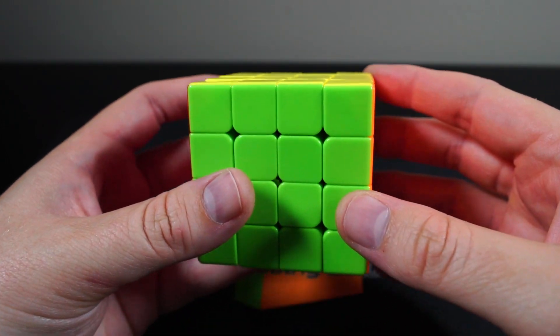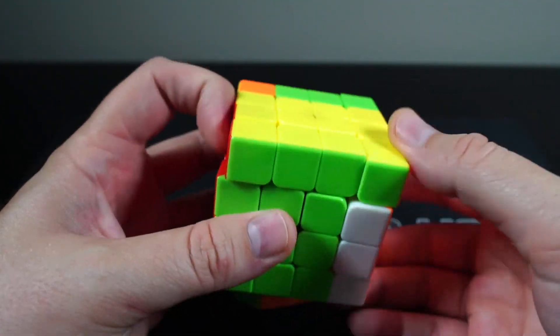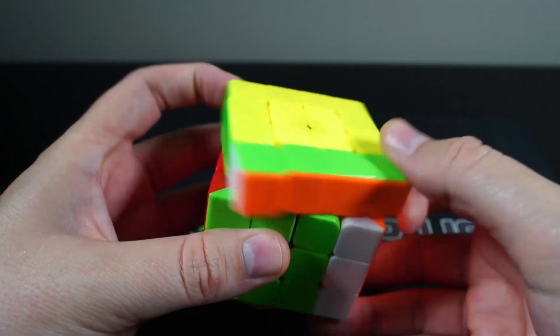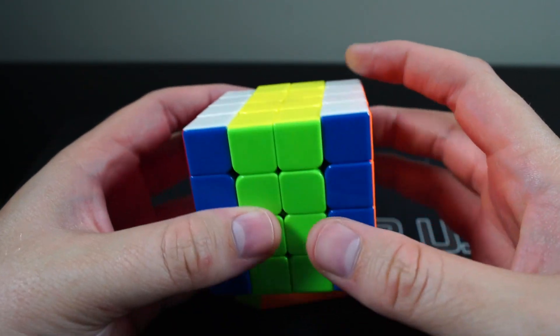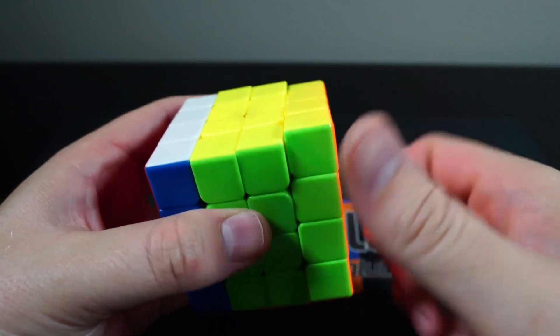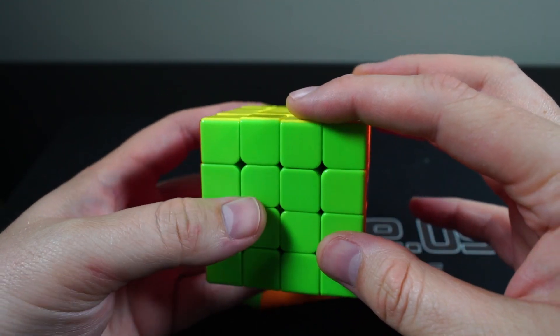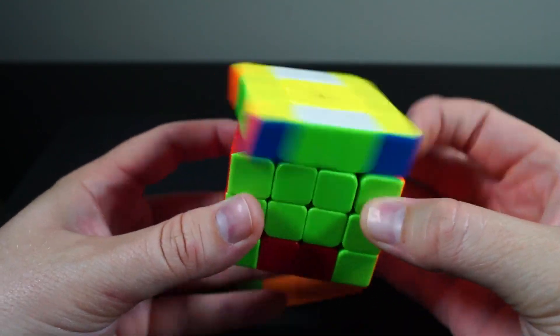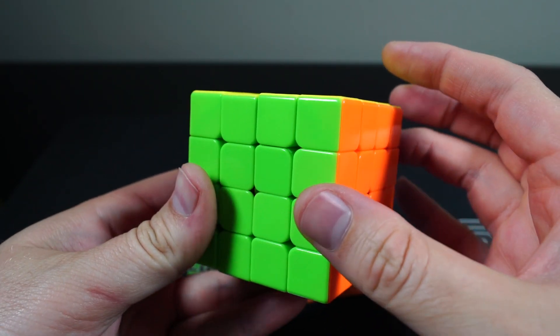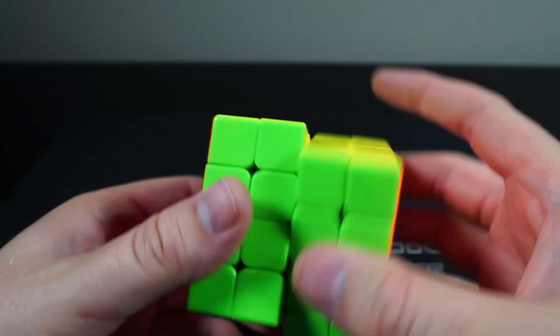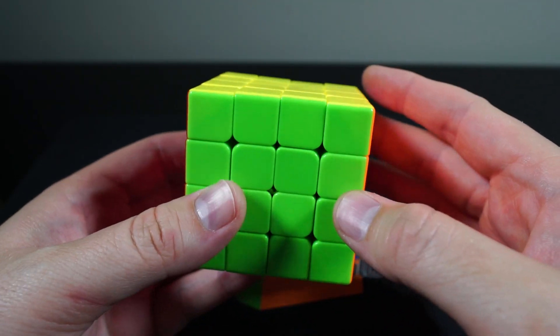The magnets that we use are actually weaker on the outer layers than they are on the inner layers. For that reason, you can do things like H-perms just like on a 3x3, which is pretty amazing to me. I think that's something that's been missing from 4x4s a lot.